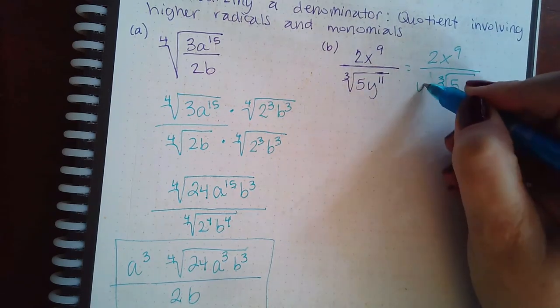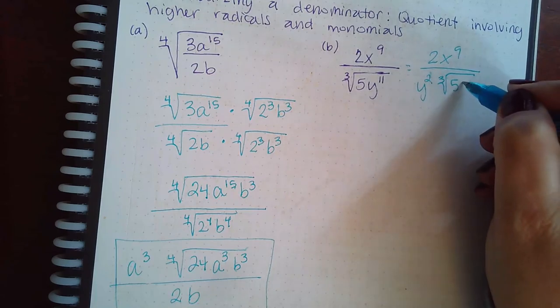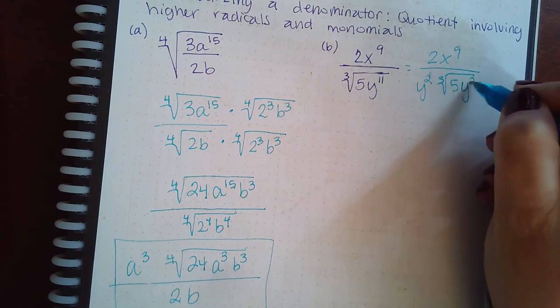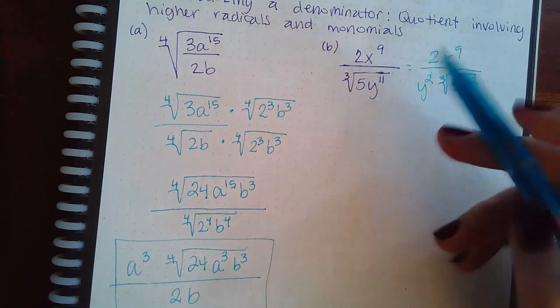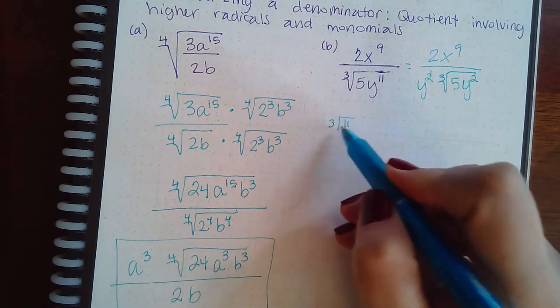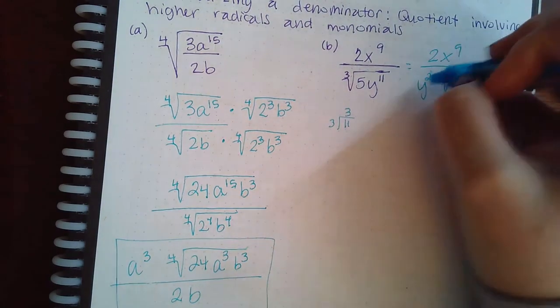But I can take some of these y's out. So 3 goes into 11 twice with 2 left over. So right, if I do 11 divided by 3, oh, it actually goes in 3 times, sorry.